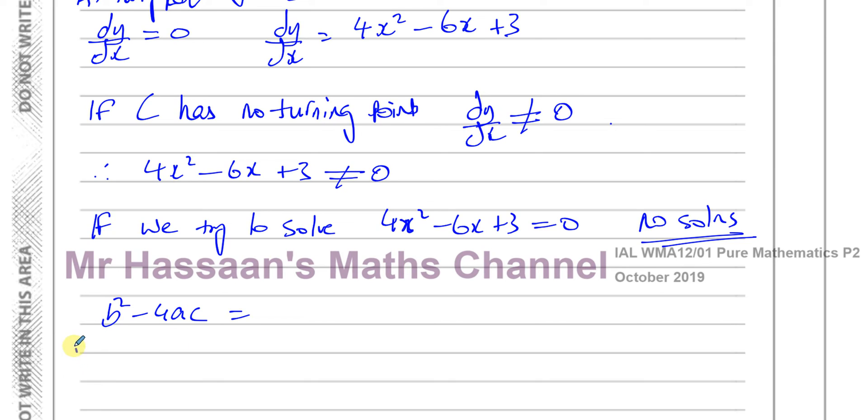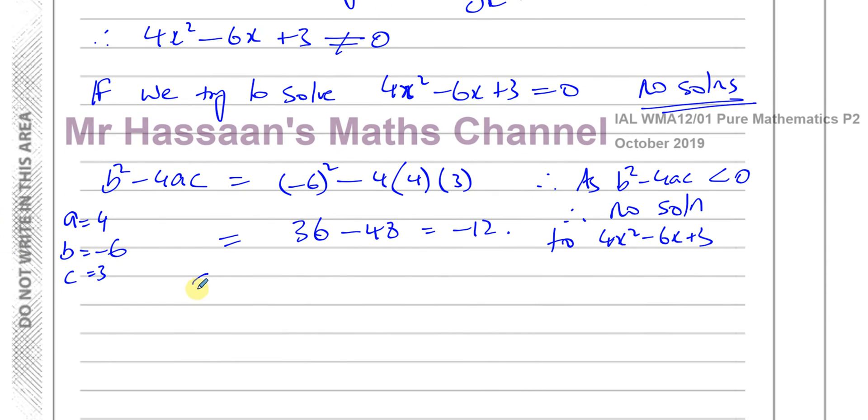So there will be no turning points, therefore. So B squared - now remember, A is 4, B is the coefficient of X, which is minus 6, and C is the constant, which is 3. So you're going to have minus 6 all squared minus 4 times A is 4 times 3. So you're going to have 36 minus 48, which gives you minus 12. So therefore, we can say as B squared minus 4AC is less than 0, therefore, there's no solution to 4X squared minus 6X plus 3. So the curve C has no turning points.